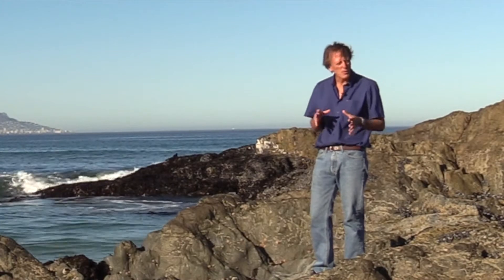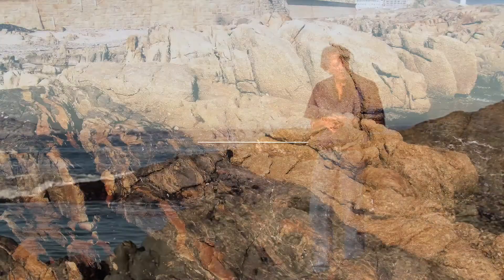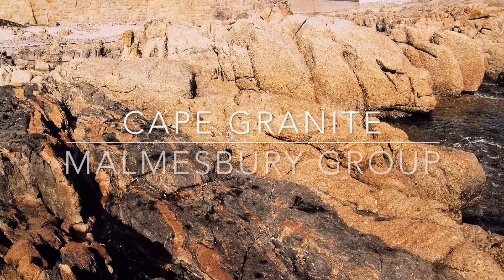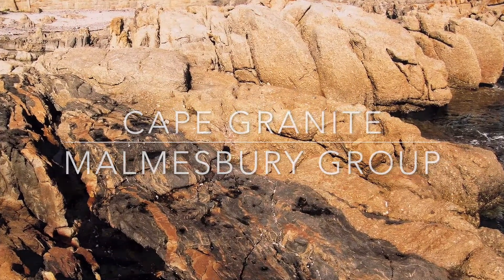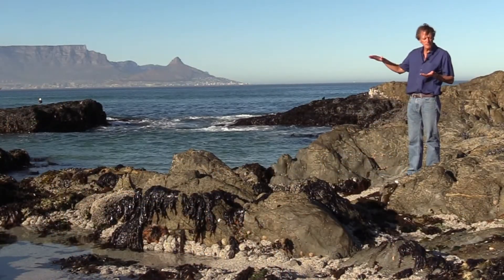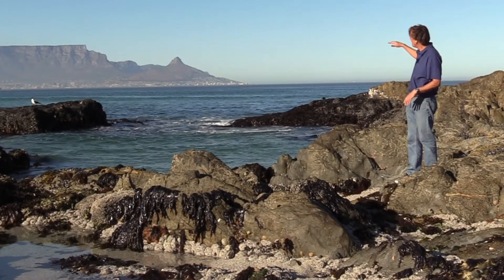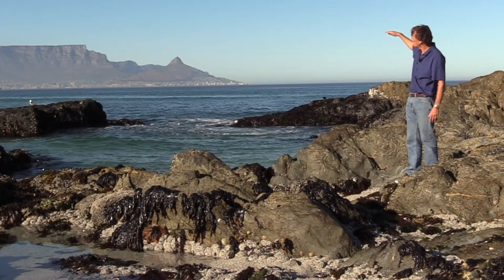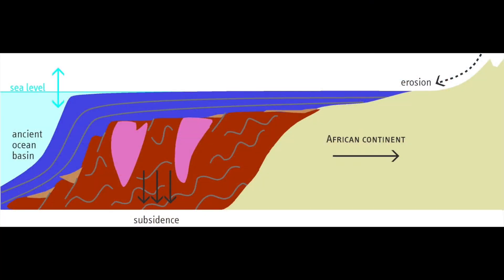These Malmesbury rocks were then intruded by the Cape Granite. And it was on that weathered surface of the bedrock that the Table Mountain group rocks that we see exposed on Table Mountain were deposited.